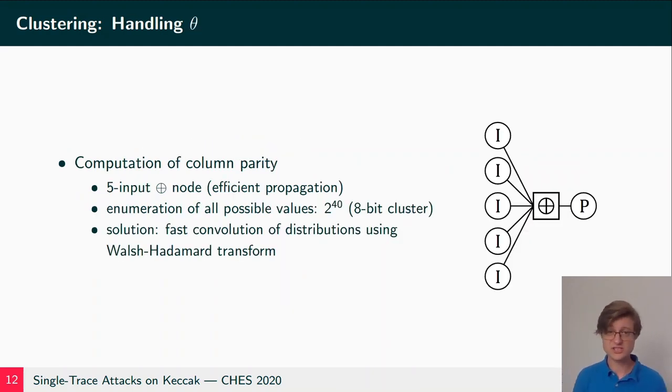There are a couple other considerations for soft analytical side-channel attacks on Keccak. For instance, the very first computation that Keccak does is the computation of the column parity. So you take five words and XOR them together, and you could model this with a series of two-input XORs, but this doesn't really work all that well with propagation, leads to slow propagation. So we instead instantiate a five-input XOR node.